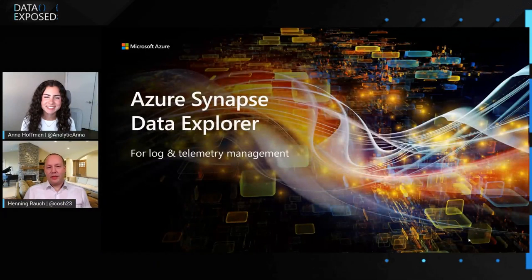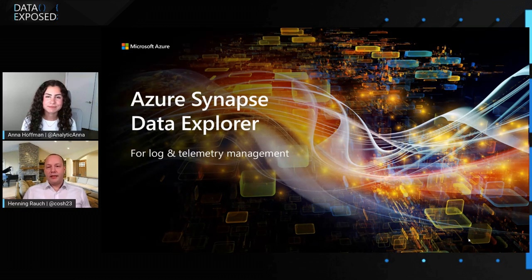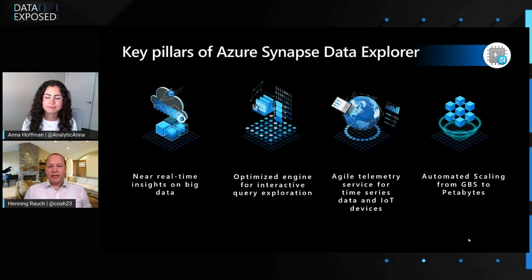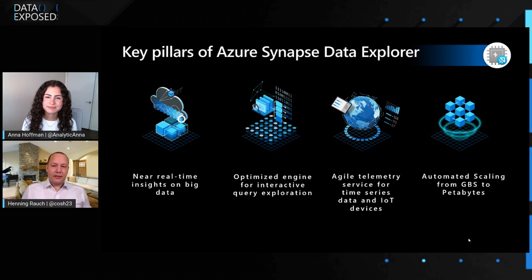Today we're going to talk about Azure Synapse Data Explorer. That's a new capability of Azure Synapse, bringing in the Azure Data Explorer capabilities into Synapse, and it enables use cases for log and telemetry management. The key pillars are the same as Azure Data Explorer itself: near real-time insights on big data, high volume, high velocity, high variance, and an optimized engine for interactive query exploration. One of the really key pillars is our intuitive query language called Kusto Query Language. You're able to store telemetry data from logs, custom logs, car telemetry data, and IoT industrial IoT data, and it can scale from gigabytes to petabytes.